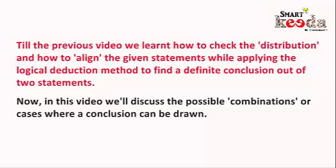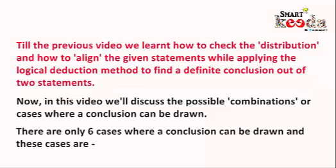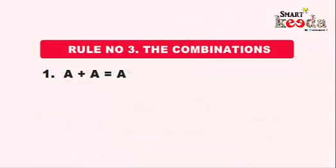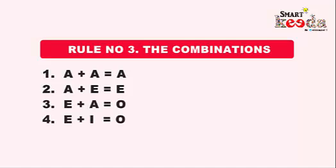There are only six cases where a conclusion can be drawn. The first case is A plus A, which gives an A type statement as the conclusion. The second is A plus E, which gives an E type statement. The next two cases — E plus A and E plus I — both give an O type statement as the conclusion.